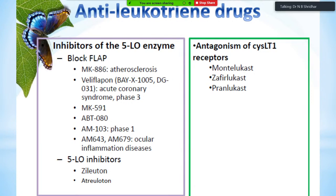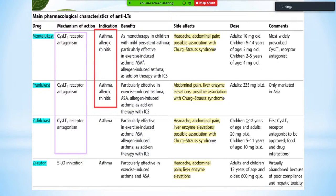Zileuton is the 5-lipoxygenase inhibitor in clinical use. The CysLT1 receptor antagonists — montelukast, zafirlukast, and pranlukast — are very commonly prescribed for allergies and asthma. All three inhibit the CysLT1 receptor and are clinically used widely.